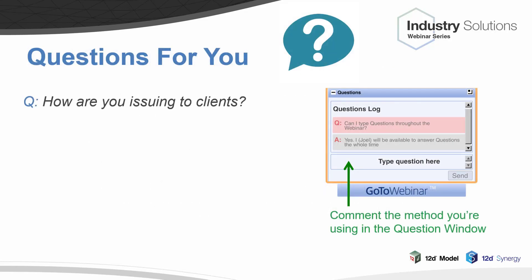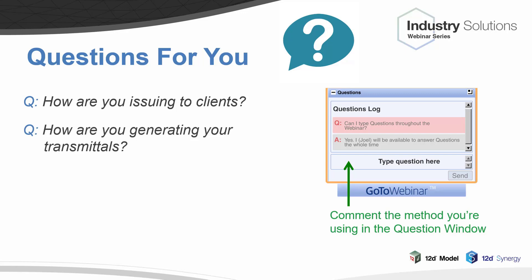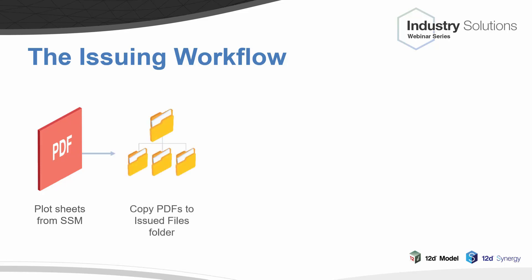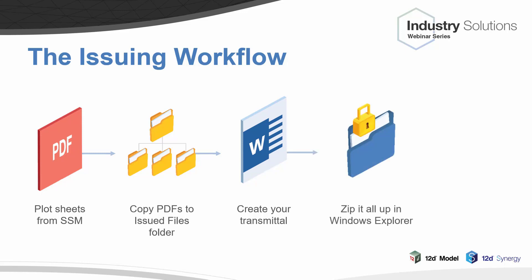How are you issuing your CAD drawings to your clients, and how are you generating your transmittals? The workflow for issuing looks like this: first you plot your sheets - generally A3 PDF. Then you copy your PDFs to an issued files folder, normally kept on a network drive so everyone has central access. Then you create your transmittals, either from Sheet Set Manager or manually in Microsoft Word, including what you're sending to who and the issue numbers. Next, you zip it up in Windows Explorer and issue it out - either post the hard drive, email it, or if it's too big for email, send it through Dropbox or OneDrive.